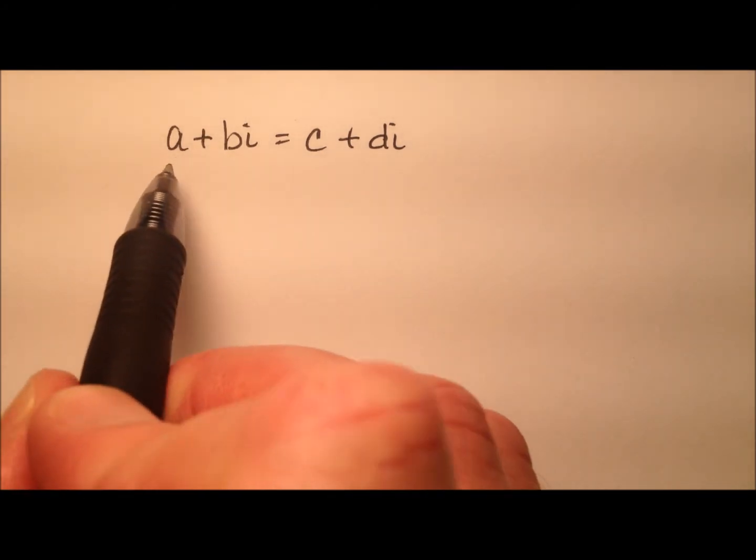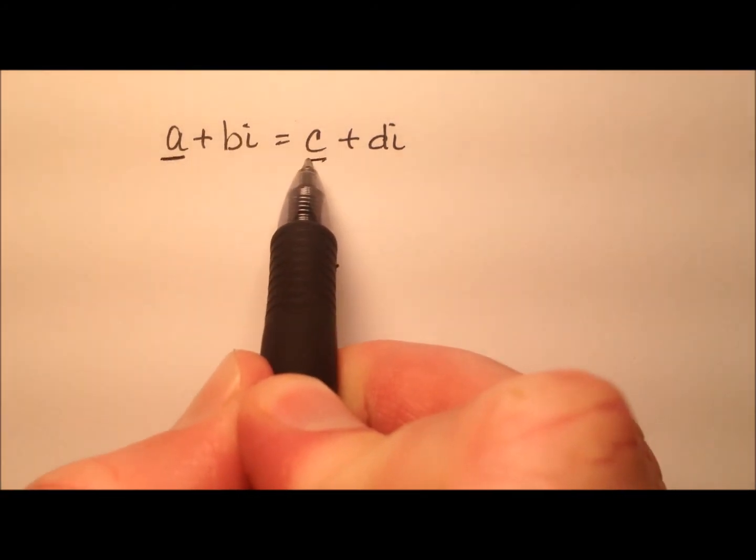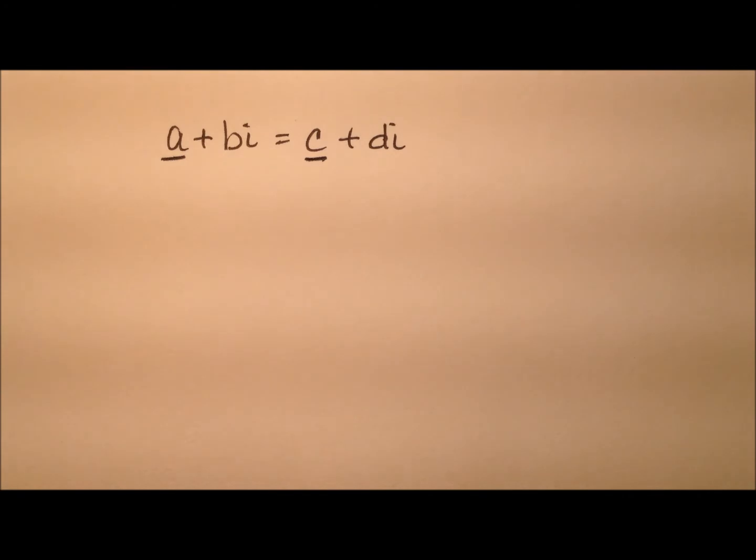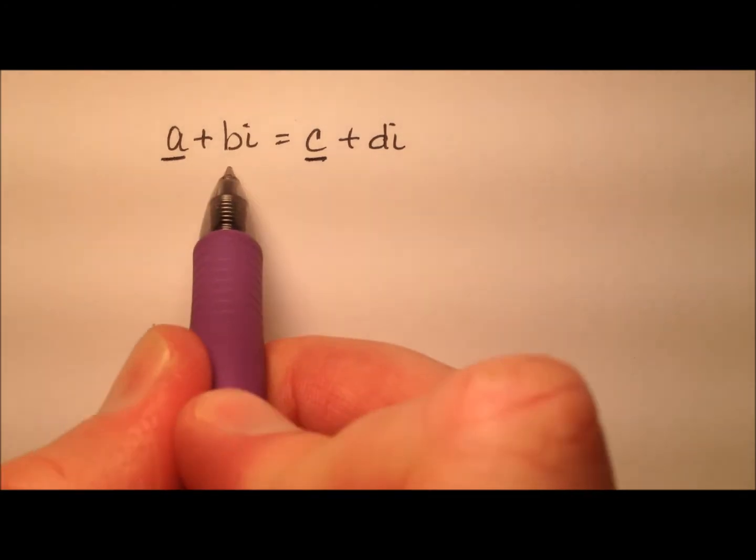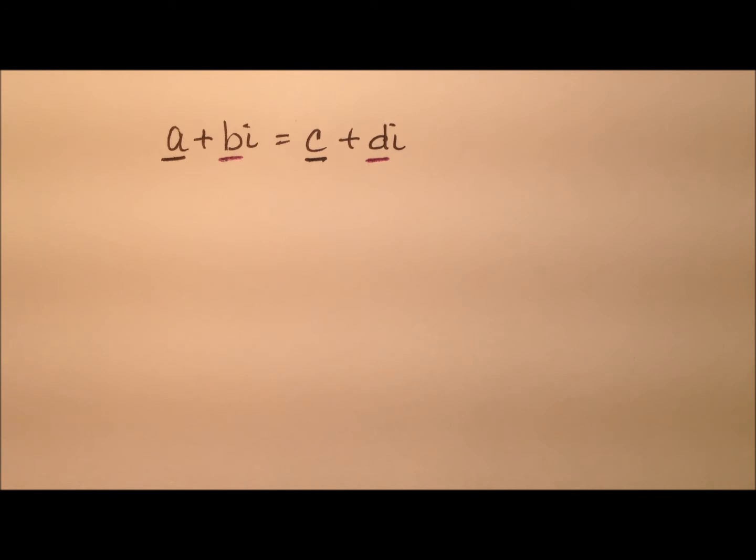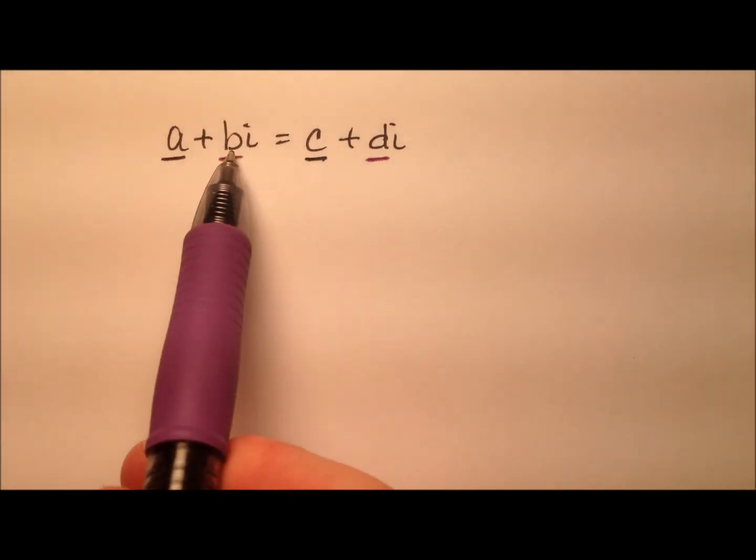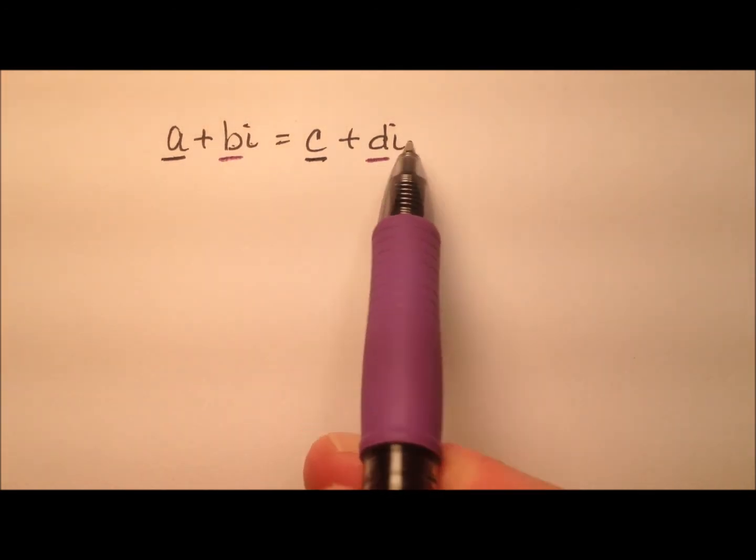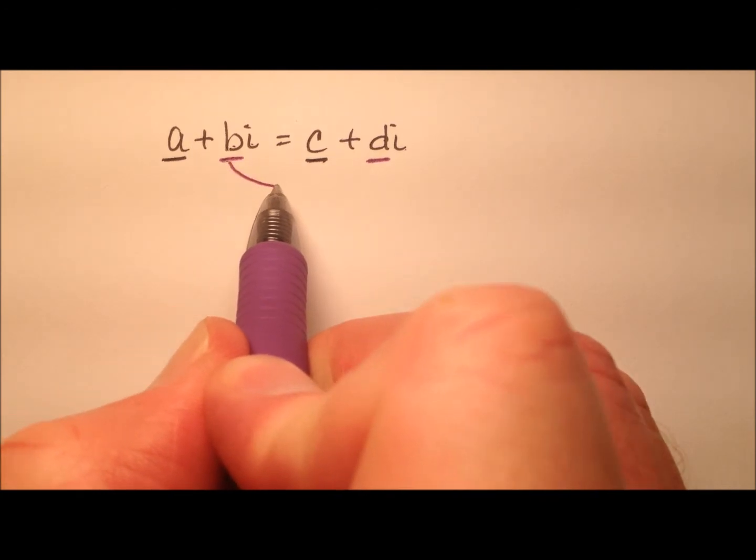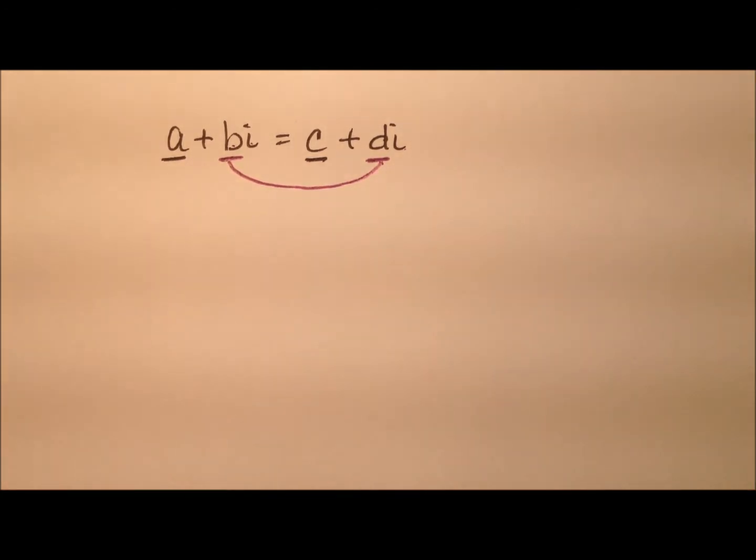Alright, so in this equation, I know that the a and the c have to be equal to one another. Similarly, the bi and the di have to be equal to one another. But of course if the bi and the di have to be equal, really I'm only considering the b and the d since both have i's with them already.